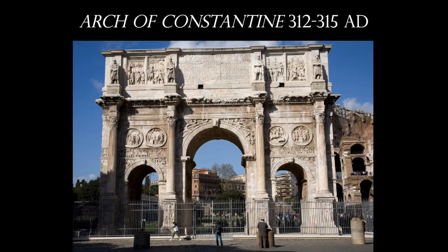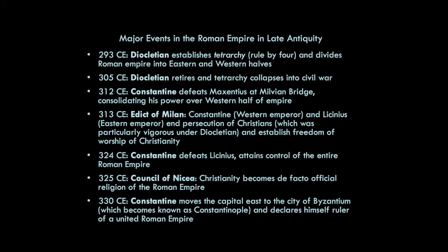Constantine's arch is one he never saw because he left Rome afterwards. In 313, he signed the Edict of Milan, which ends the persecution of Christians. Then in 324, Constantine defeats Licinius and attains control over the entire Roman Empire. At 330, Constantine moves the capital east to the city of Byzantium, which later becomes Constantinople, and declares himself ruler of a united Roman Empire.